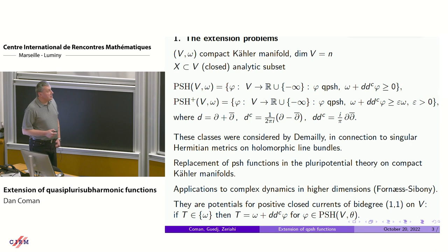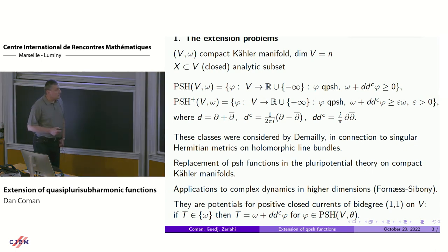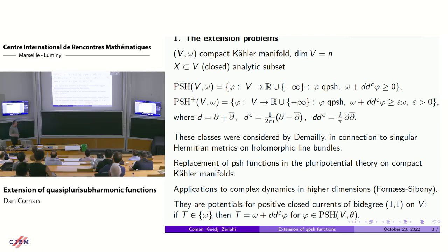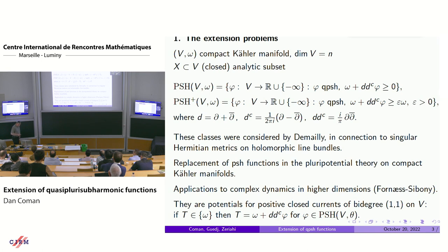These are classes that were used a lot in complex geometry. They were considered systematically by Jean-Pierre Demailly, for example, in connection to singular metrics on holomorphic line bundles and many questions in complex geometry. And since there are no plurisubharmonic functions except for constants, they are the replacement when you want to study pluripotential theory on a compact Kähler manifold. They had a lot of applications to complex dynamics in higher dimensions, starting with the work of Fornaess and Sibony, and they give global potentials for positive closed currents of bidegree (1,1) in the cohomology class of omega.